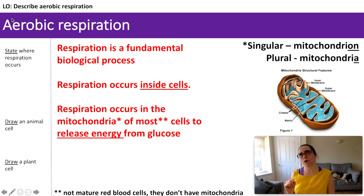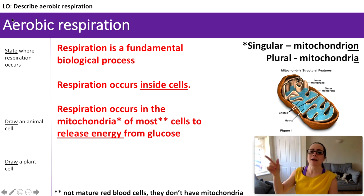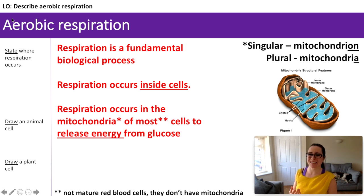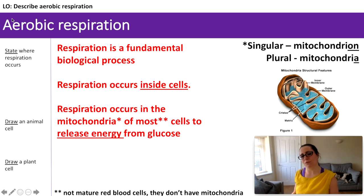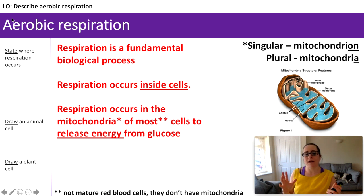With plant cells, we've got three additional subcellular organs that we would need to draw. Animal cells are very squidgy; plant cells have a rigid structure to them — something is there for structure and support. Plant cells also have the ability to photosynthesize, so what have they got in addition to animal cells that allows them to do that? They will also need something to help maintain pressure in the cell — think about what subcellular organ they might need for that.